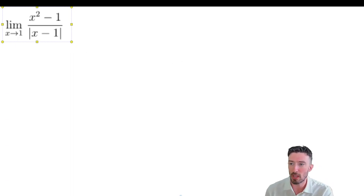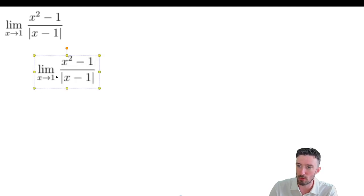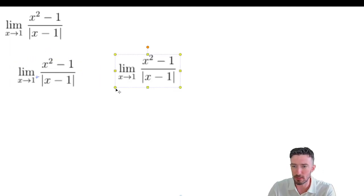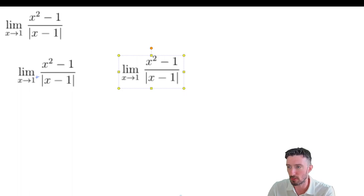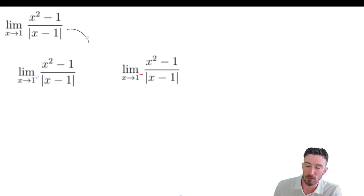Hey, we've got ourselves an absolute value limit problem. So the way to start this off is by breaking it up into the limit from the right and also the limit from the left. And we're going to check to see if these are equal. If they are, then it will be equal to the original limit. If they're not equal, all bets are off. That means that the original limit does not exist. Alright, so let's see what happens.